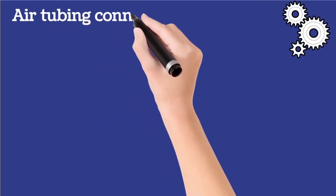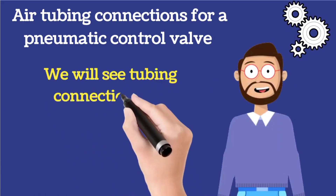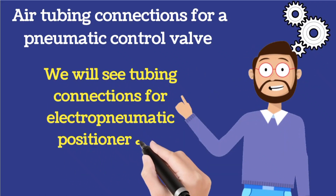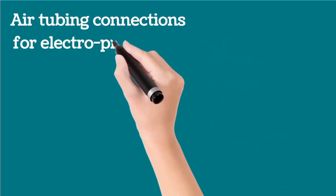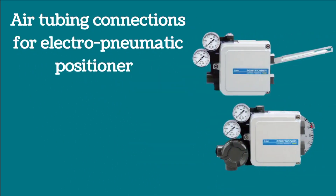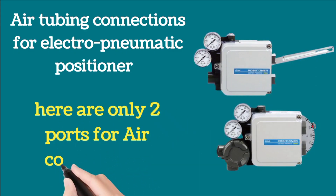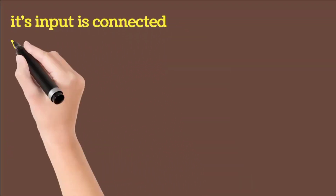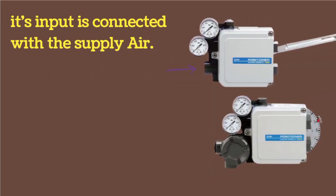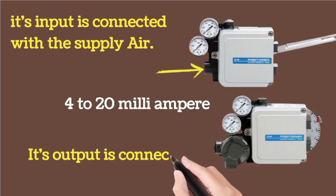Let me explain air tubing connections for a pneumatic control valve. We will discuss tubing connections for the electropneumatic positioner and the pneumatic positioner. First, I will explain air tubing connections for the electropneumatic positioner. Tubing connections are very easy for this positioner. This positioner has only two ports for air connections. Its input is connected with supply air. A 4 to 20 milliampere signal is provided here as shown in the image, and its output is connected with the control valve.